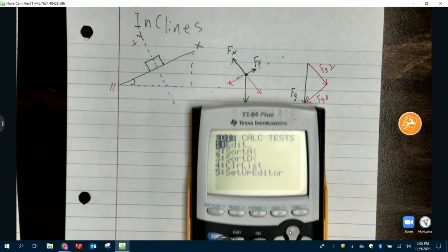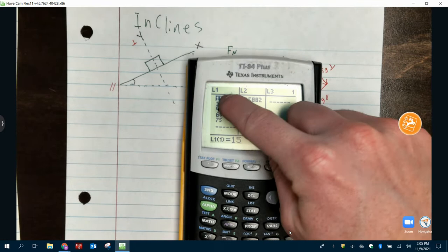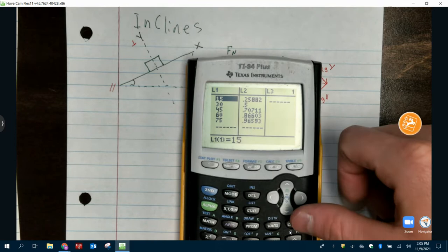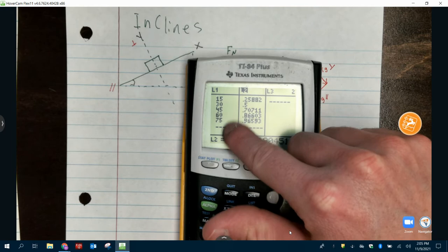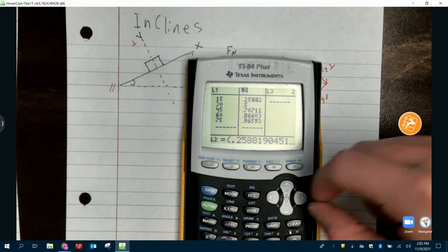We're going to go to now stat and then edit. So stat and press enter on edit. And what I want you to type in are these numbers here: 15, 30, 45, 60, 75. These are going to be our angles, our degrees. And we're going to make a plot with this. We're going to go to on L1, 15, 30, 45, 60, 75. That was stat and then enter.